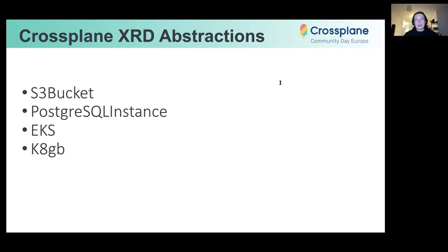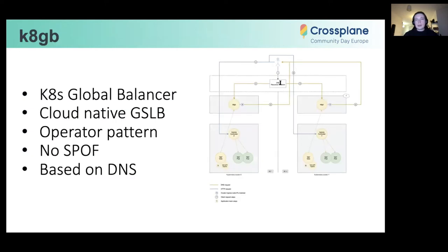So we mostly focus on the K8GB part today. Meanwhile, the principles of Crossplane-based compositions are shared between these resources. So what is K8GB? It is an open source project that we developed in Absa. It is a cloud native Kubernetes global load balancer. It is Kubernetes native and it enables global service load balancing function for workloads that are deployed on top of Kubernetes clusters, typically in geographically dispersed data centers or different cloud regions, like different AWS regions.